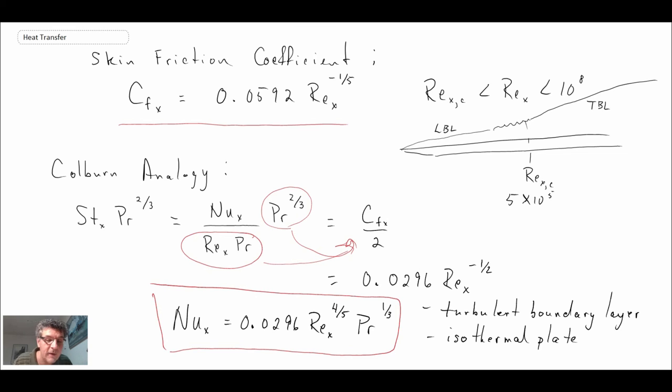So that is an example of what you would do if you want to determine the convective heat transfer coefficient for a turbulent boundary layer. You basically use Colburn analogy and you use the friction coefficient values. Plug it into Colburn analogy and then you obtain your expression.